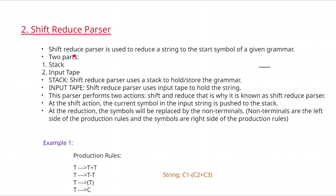In the shift reduce parser you will have two parts: the first one is the stack and the other is the input tape. Stack is a data structure where we arrange elements in a systematic order. In this shift reduce parser, the stack is used to store the grammar rules. The input tape is where we store the input string.